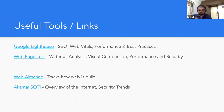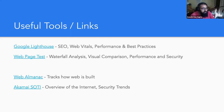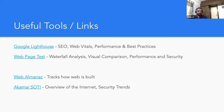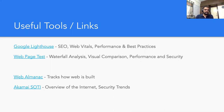That covers most of what I wanted to talk about. Some useful tools: Google Lighthouse and WebPageTest for performance analysis, the HTTP Archive for understanding trends on how websites are built, and the Akamai State of the Internet report which covers general internet overview and security trends. These are good resources for staying current on internet and security trends.